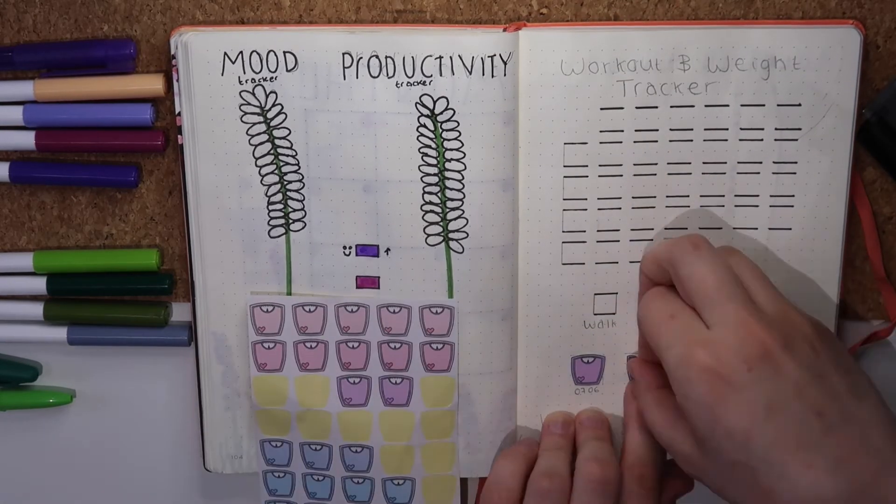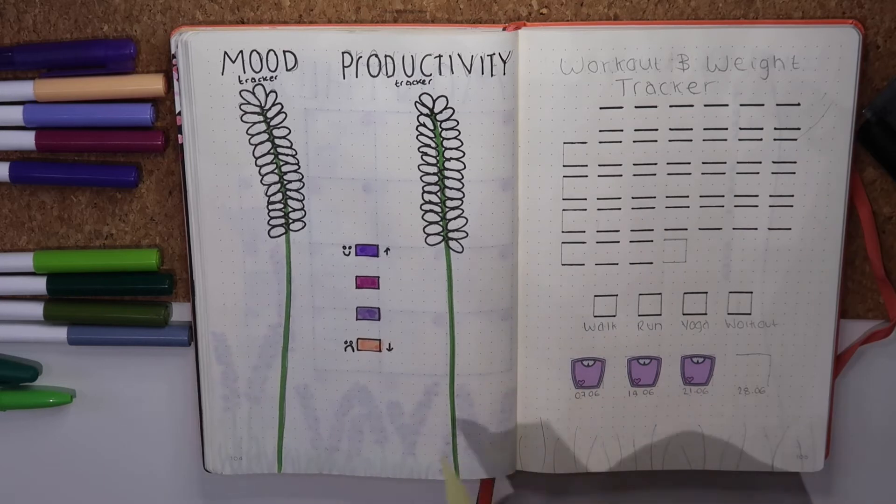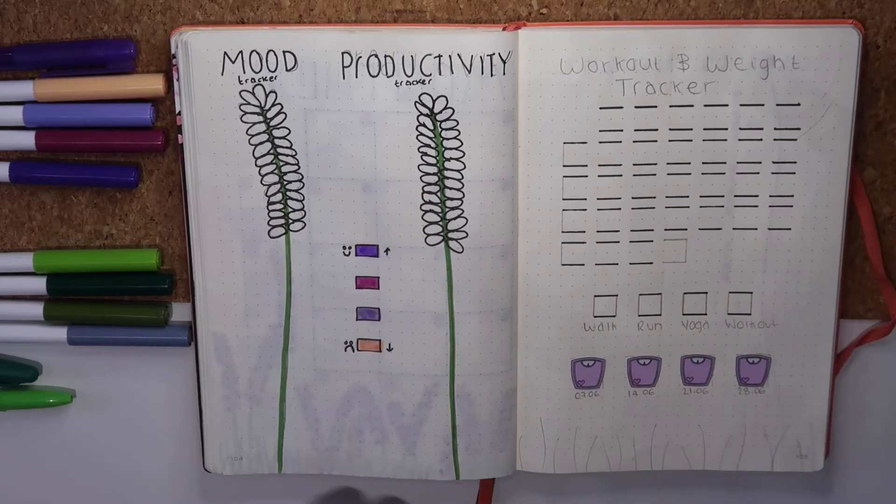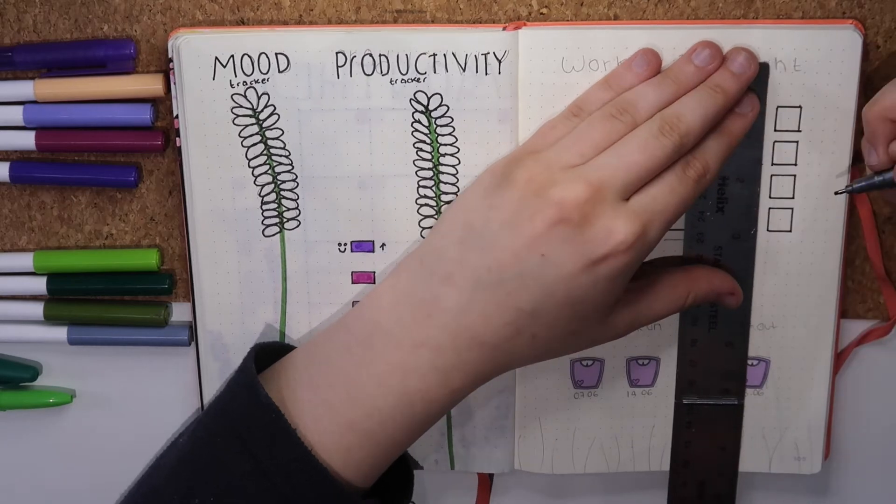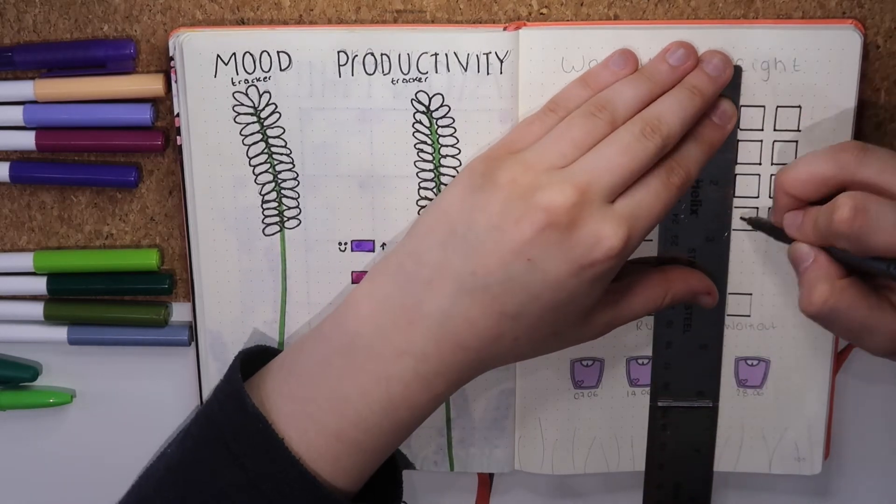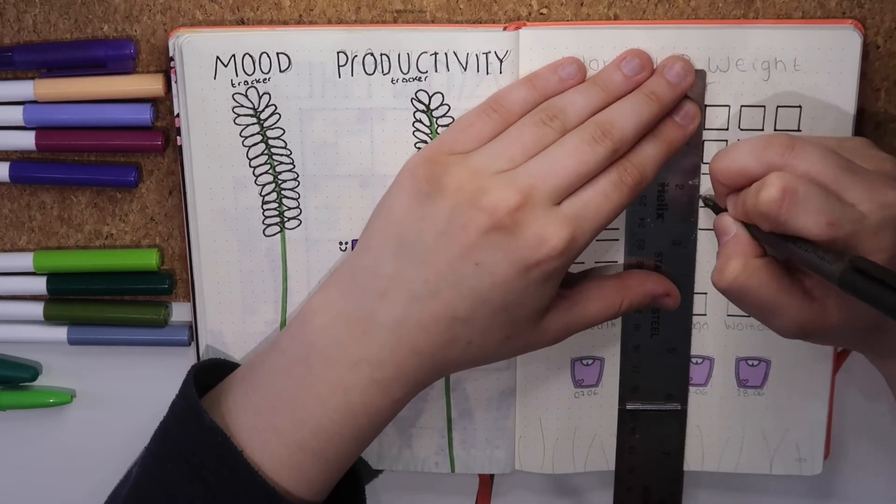For this I just do a monthly calendar layout using a two by two grid space for each square or day, and then use the same color felts for the key as I did on the mood and productivity page.